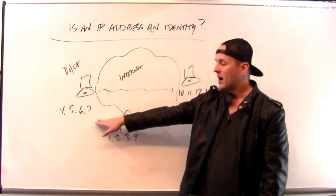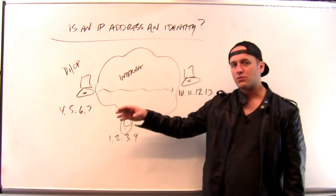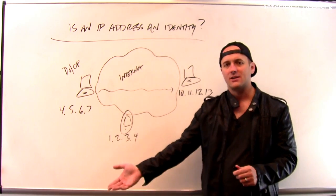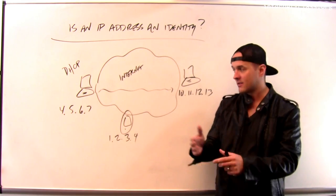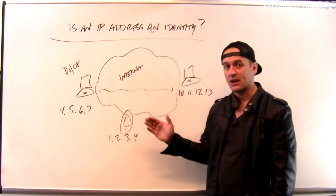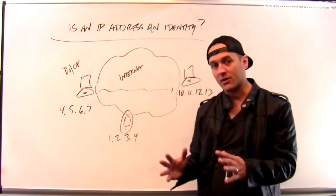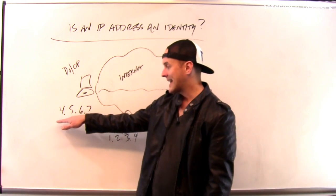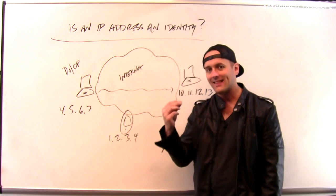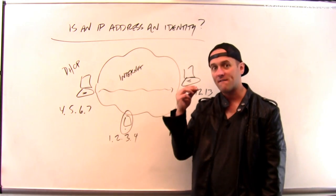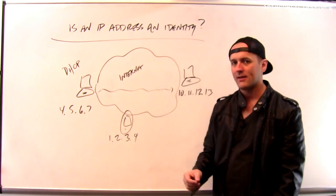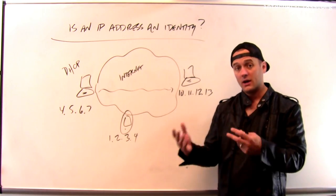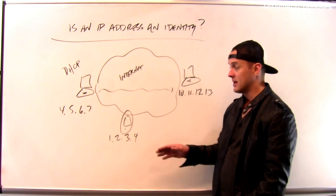So, for example, if you are at home on your computer and you launch some sort of attack on a website or you hack into somebody's computer and try to steal something or something like that, eventually the government is going to come to your Internet service provider and they are going to ask what account was associated with this particular IP address at that particular time. And they're going to find out who you are and they're going to come after you and try to hold you responsible for whatever you've done.